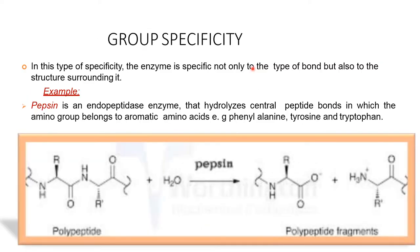Group specificity. In this type of specificity, the enzyme is specific not only to the type of bond but also to the structure surrounding it. For example, pepsin is an endopeptidase enzyme that hydrolyzes the central peptide bond in which the amino group belongs to aromatic amino acids such as phenylalanine, tyrosine, and tryptophan.